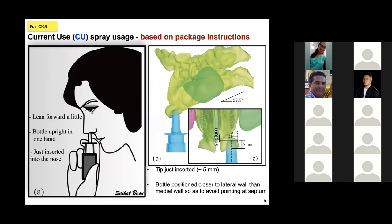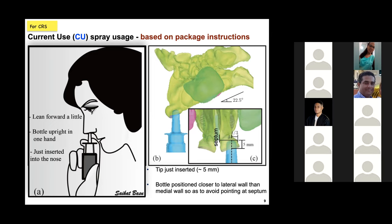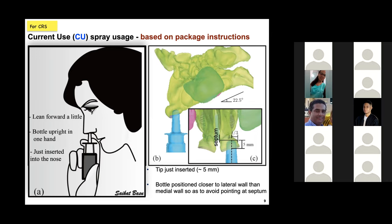Para contestar la pregunta inicial de cuál sería la mejor estrategia, comenzamos con lo que se recomienda en los insertos de los medicamentos intranasales para las alergias. El modelo típico habla de una inclinación de la cabeza hacia el frente e introducir el atomizador paralelo al piso. En el laboratorio tomaron el modelo intranasal a 22.5 grados y la inserción de 5 milímetros en la cavidad nasal, queriendo entender si este modelo es realmente el más efectivo.